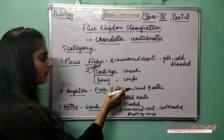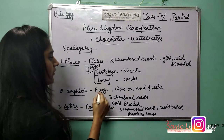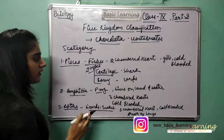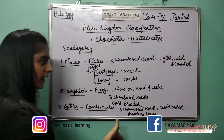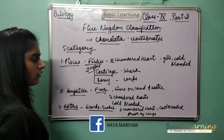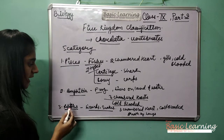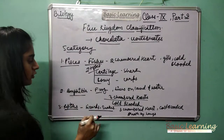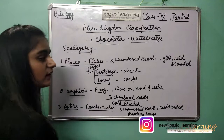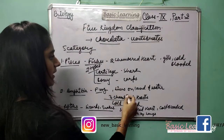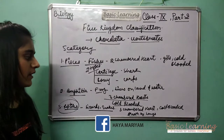The second category is Amphibia — example: frog. Amphibian means which lives on land as well as in water. They have a three-chambered heart and are cold-blooded. The third is Reptilia — examples: lizards and snakes. They also have a three-chambered heart, are cold-blooded, and breathe through lungs.